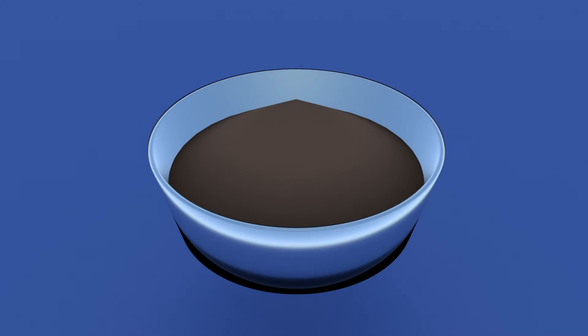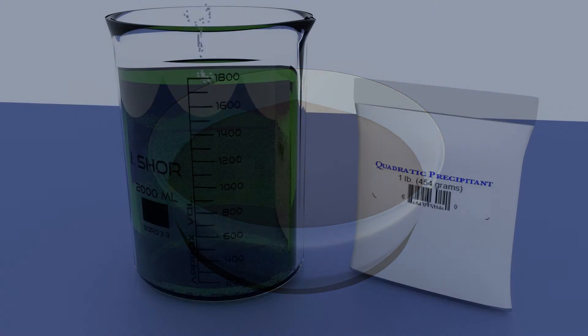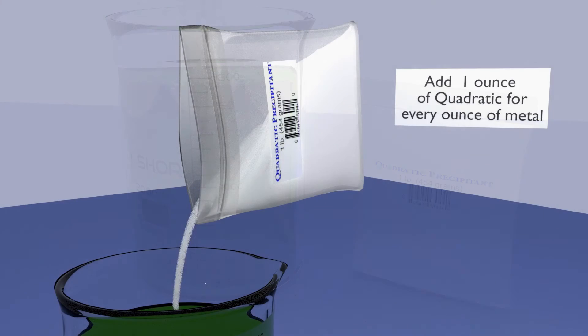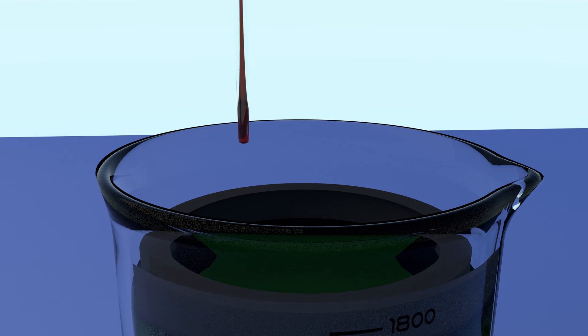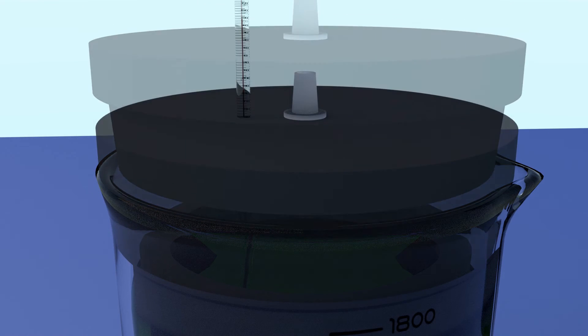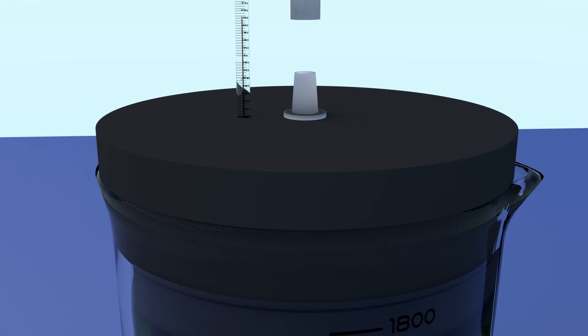We are ready now to convert the dissolved gold into gold particles. Add 1 ounce of quadratic for every ounce of dissolved metal. Replace the cap and bring the beaker back inside, reconnecting it to the scrubber.